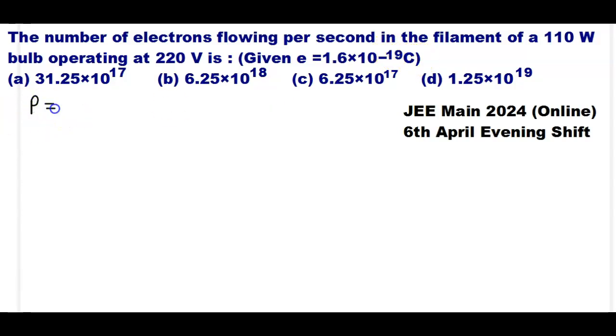Given: the power of the electric bulb is 110 watts and the operating voltage V is equal to 220 volts.